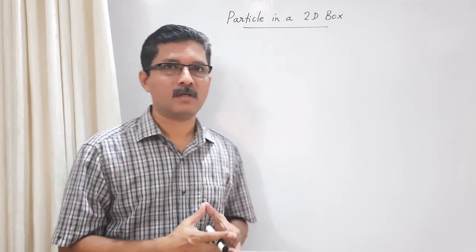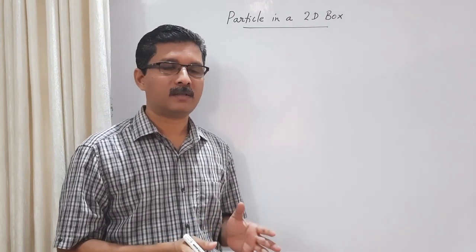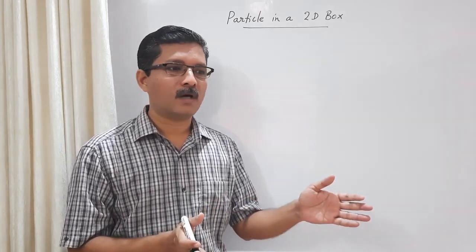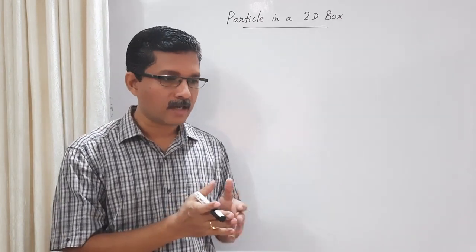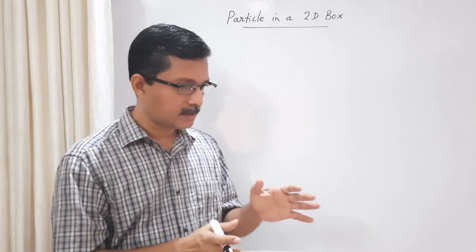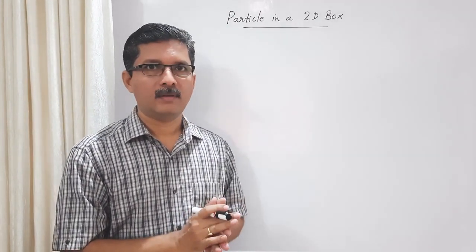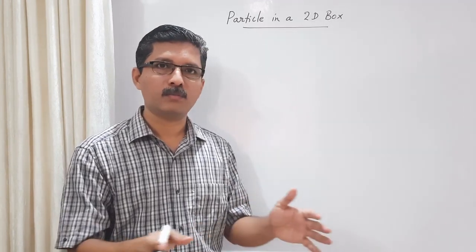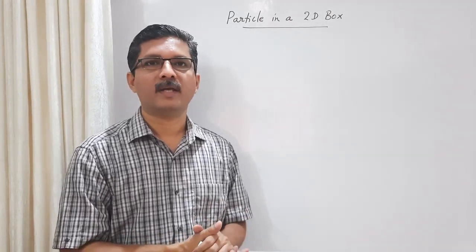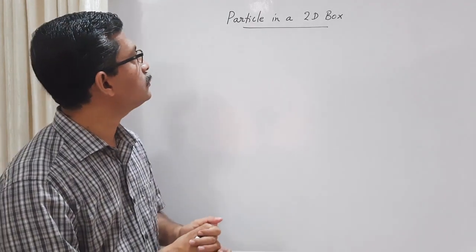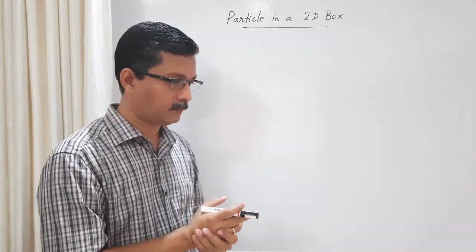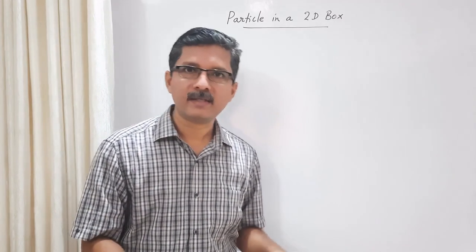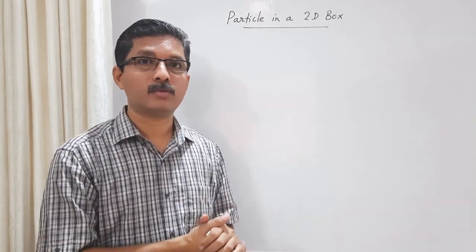In the previous few classes we were discussing a particle trapped in an infinite potential well in one direction, basically a particle confined to move along a line, so we call this a one-dimensional box. Now consider the situation of a particle confined to move on a plane. There are different experimental techniques in which particles can be confined to move on a metal sheet, a two-dimensional plane, and such experimental situations we can model as a particle in a two-dimensional box.